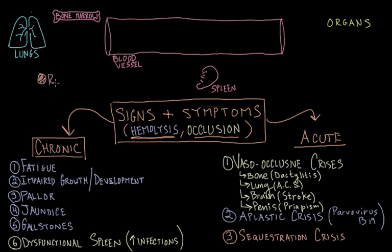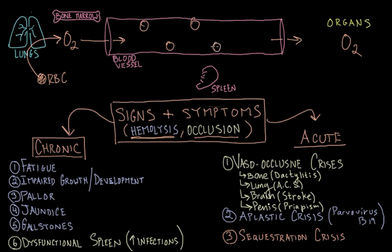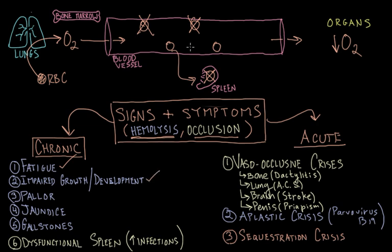Red blood cells go to the lungs where they pick up oxygen and use the vasculature to deliver oxygen to various organs and tissues throughout the body. If we're destroying these red blood cells — both intravascularly and extravascularly — we're diminishing the amount of oxygen delivered to organs and tissues. This accounts for things like fatigue, and in adolescent patients, impaired growth and development. If you destroy enough red blood cells, patients can become pale.